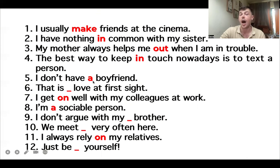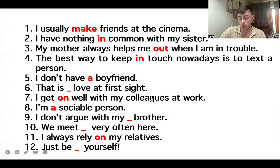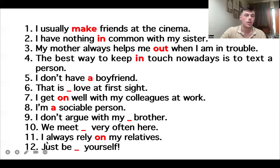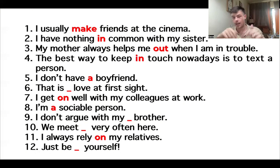Five: I don't have a boyfriend. Have a boyfriend. Six: that is love at first sight — this sentence is good as it is. Seven: I get on well with my colleagues at work. Get on well means you like each other, maybe you're quite friendly. Eight: I'm a sociable person. Nine: I don't argue with my brother. Ten: we meet very often. Eleven: I always rely on my relatives, my family. Twelve: just be yourself. How many did you get right? You can write it in the comments or drop us a message telling us your results.